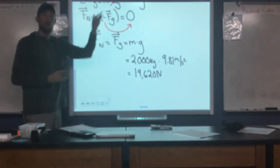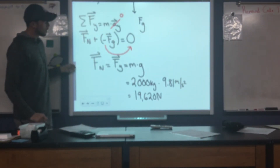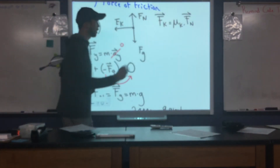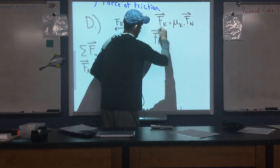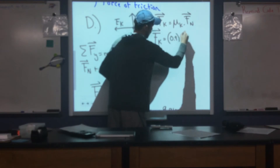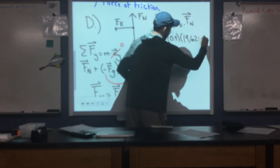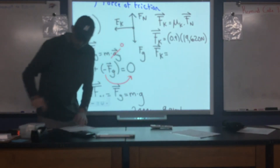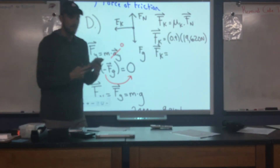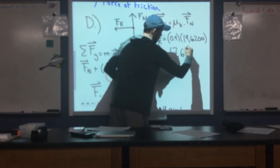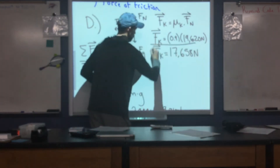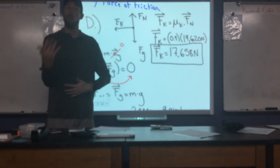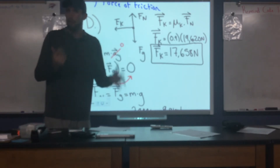That gives us our normal force of 19,620 N, which we now use to find the force of friction. F_k = 0.9 × 19,620 N = 17,658 newtons. So the force of friction on the red car is 17,658 newtons. This part draws us back to what we covered previously in the year — using what we know about forces and Newton's laws to analyze what's going on.